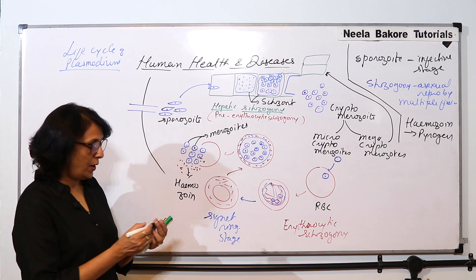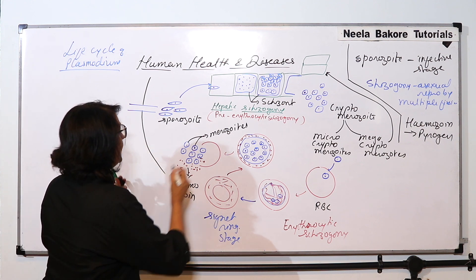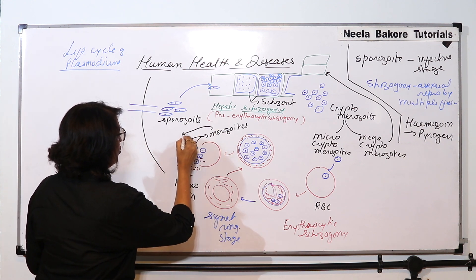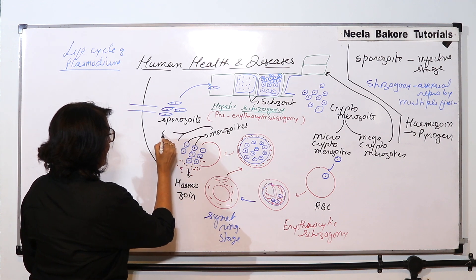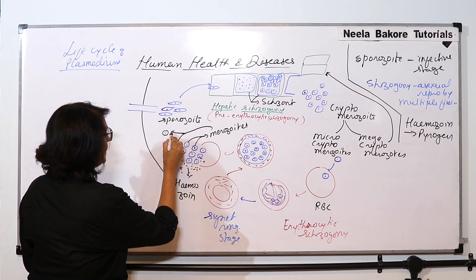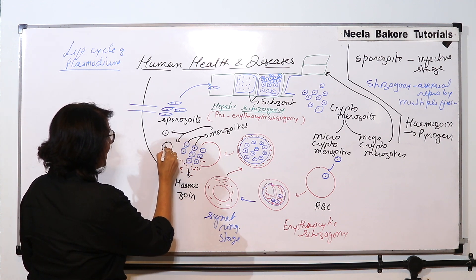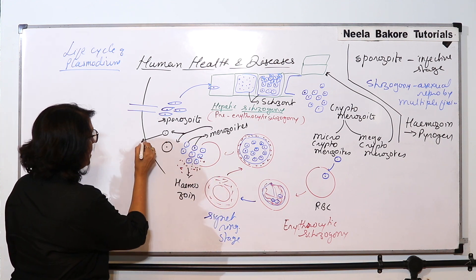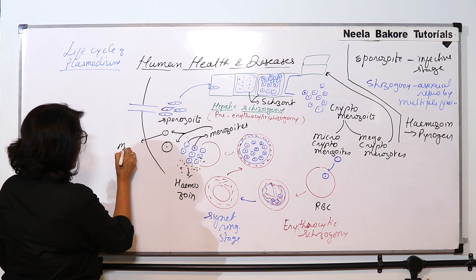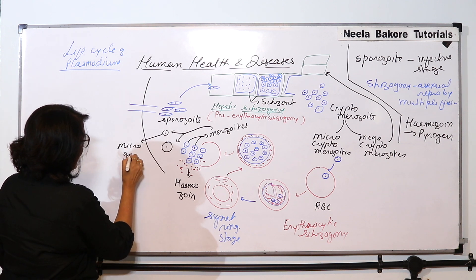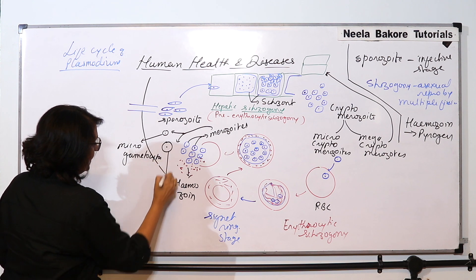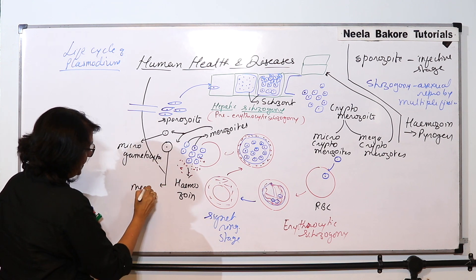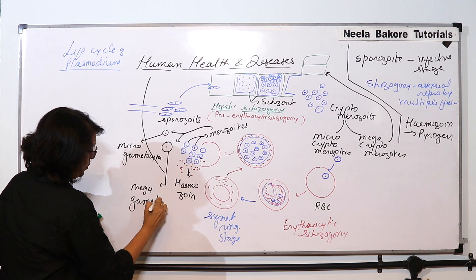Now these merozoites change into two sizes. There are some smaller cells and there are some larger cells. The smaller cells are called the microgametocytes and the larger ones are called the macrogametocytes.